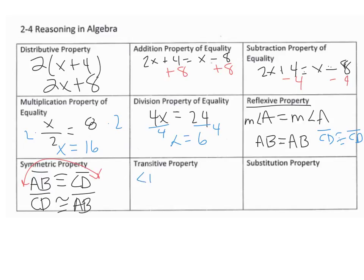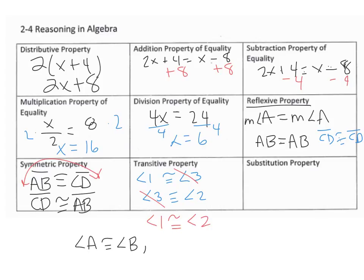The transitive property is also used a lot. It would look like this: angle 1 is congruent to angle 3, and angle 3 is congruent to angle 2. This reminds me of the law of syllogism — we don't really need the middle one, so we conclude that angle 1 is congruent to angle 2. Another example: angle A is congruent to angle B, and angle B is congruent to angle C, therefore angle A is congruent to angle C.